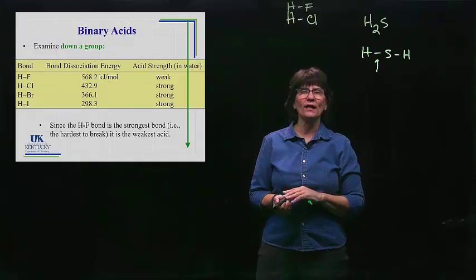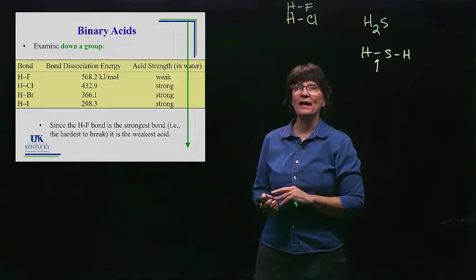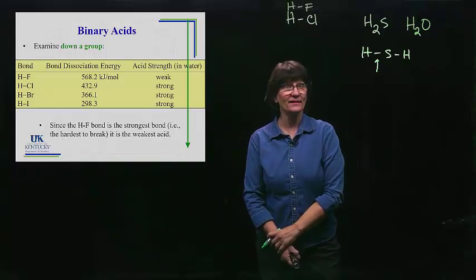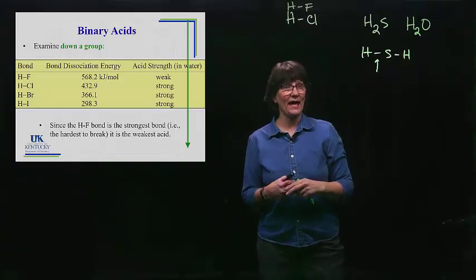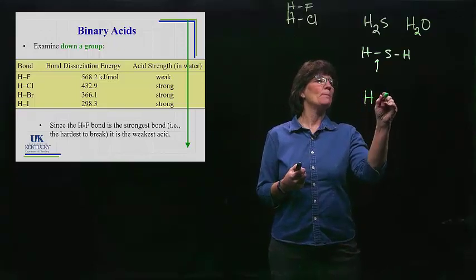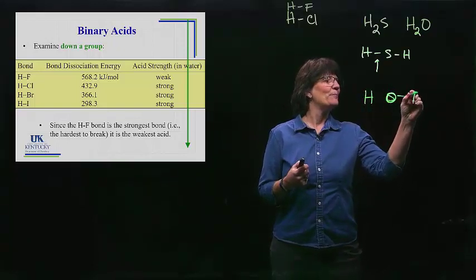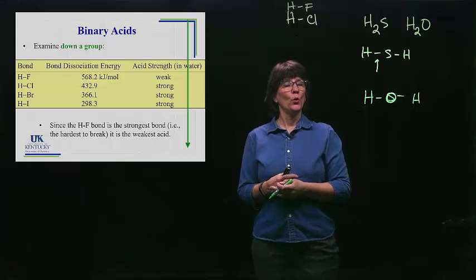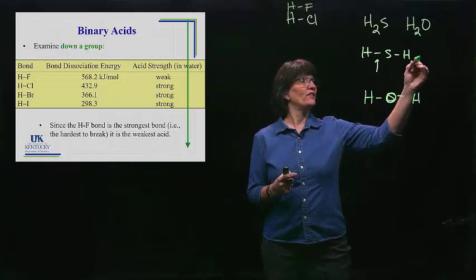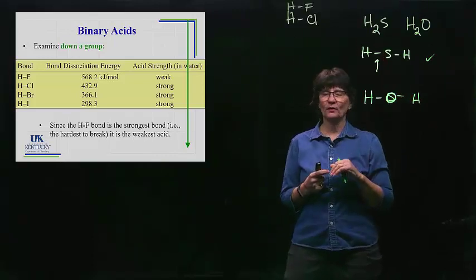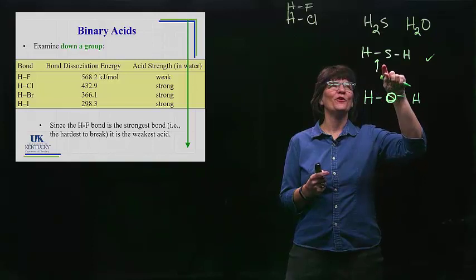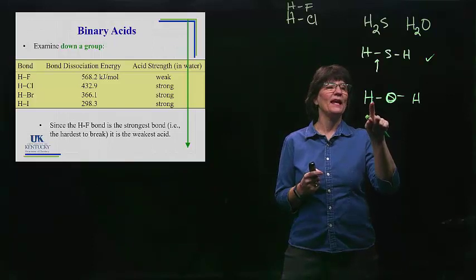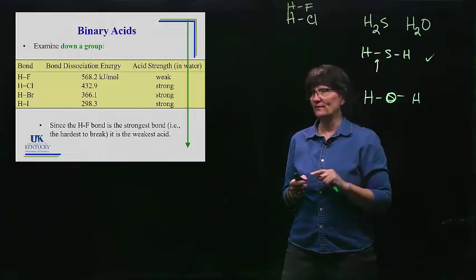We're not looking at electronegativity when comparing these binary acids. So if we compare H2S and H2O as acids — and we know water can be thought of as an acid — we're considering the bond strength. Look at a periodic table and predict which one would be stronger. H2S is further down the periodic table, therefore it has a weaker bond, therefore it is a stronger acid. H2O is further up, it has a stronger bond, therefore it is a weaker acid.